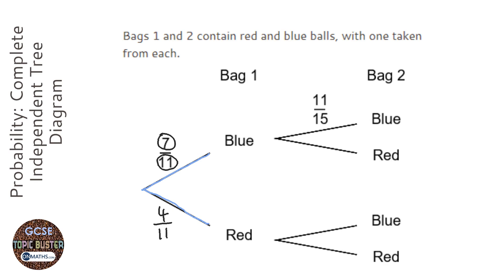Same thing on the right-hand side - we've got 15 altogether and we've got 11 at the top, so we've got four left there. Now, if the probability of picking a blue from bag two is 11 over 15...